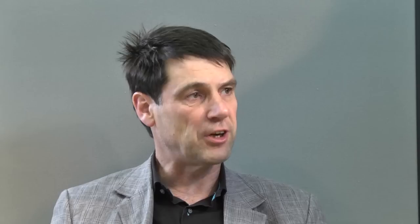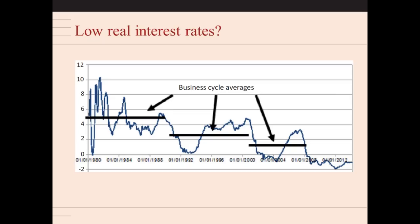Secular stagnation means different things to different people. How do you define it? Let me focus on the view by Paul Krugman and Larry Summers, who think that the central issue of secular stagnation is the steady decline of the real interest rate over the past 40 years. This picture shows interest rates over the past three or four business cycles, coming down from something like 5% in the 80s to a negative number currently.